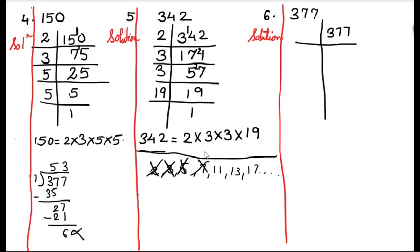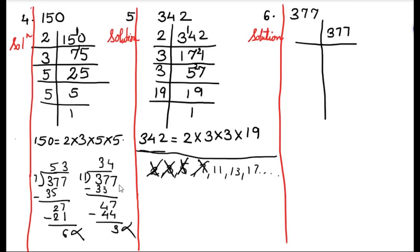Now we will try by 11. So 11 into 3 is 33, with 77 remaining. 11 fours are 44, minus 3. So again the remainder is not zero. This is rough work — you will do it in a rough book or on a rough page. It is also not divisible by 11.